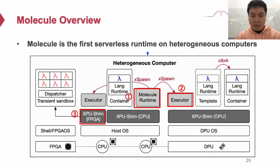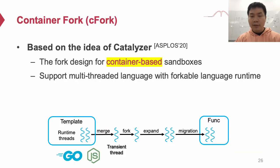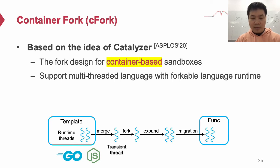Molecule is carefully designed to optimize the startup and communication latency on heterogeneous computers. Startup latency is a significant challenge for serverless computing. Molecule proposes container fork, which is based on the idea of Catalyzer to fork a container-based sandbox. As far as we know, it is the first fork-based startup design for container-based sandbox and can support multi-threaded languages. SafeFork requires a template container to generate new instances. To support multi-threaded instances, we modify the runtime to save multi-threaded context into memory, and then fork the single-threaded instance and span to multi-threaded context after forking.